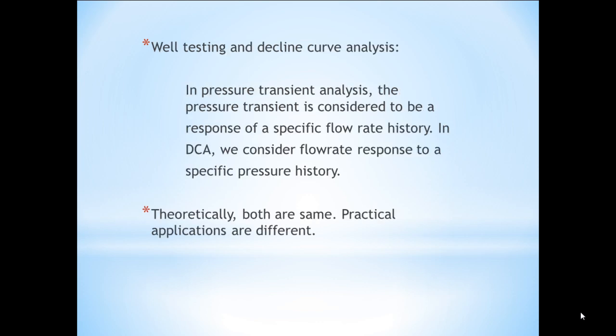In pressure transient analysis, the pressure transient is the response of a specific flow rate history. The input is the flow rate history and the output is the pressure transient. In decline curve analysis, we consider flow rate response to a specific pressure history. The input is the specific pressure and the output is the flow rate response.